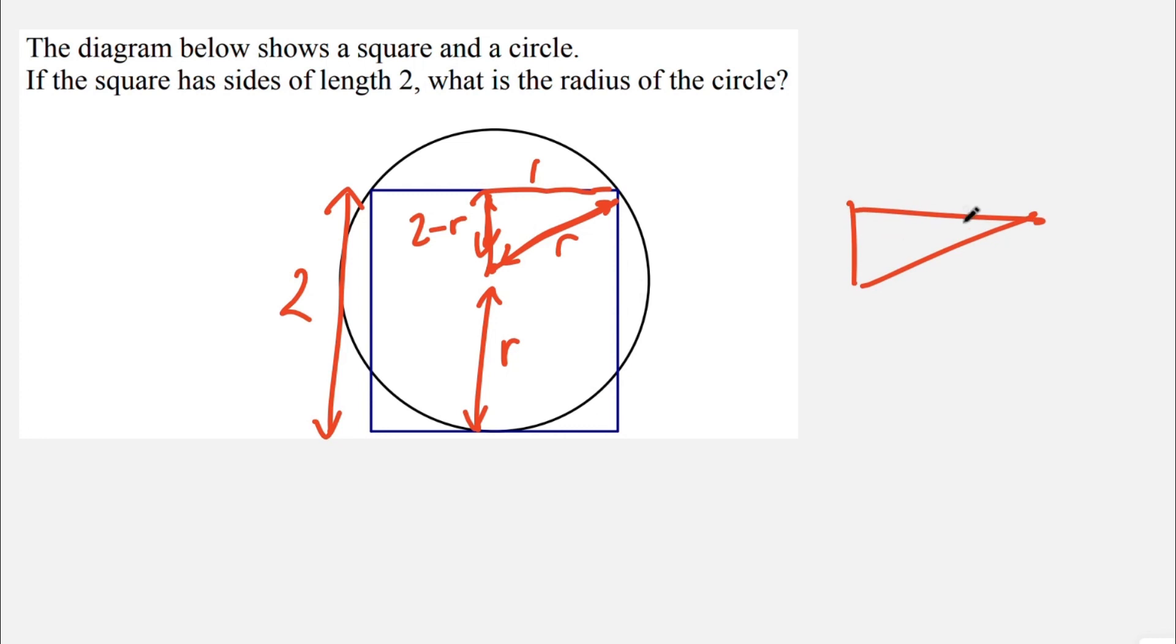And so therefore, we have a right-angled triangle. That side length is 1. There's our right angle. That's 2 minus R, and that's R.